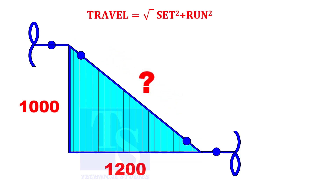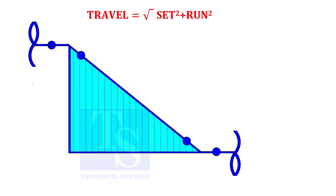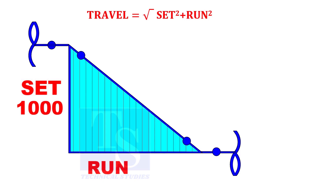Travel is equal to the square root of the sum of the squares of the set and the run. Set is 1000 and the run is 1200. Let us calculate.